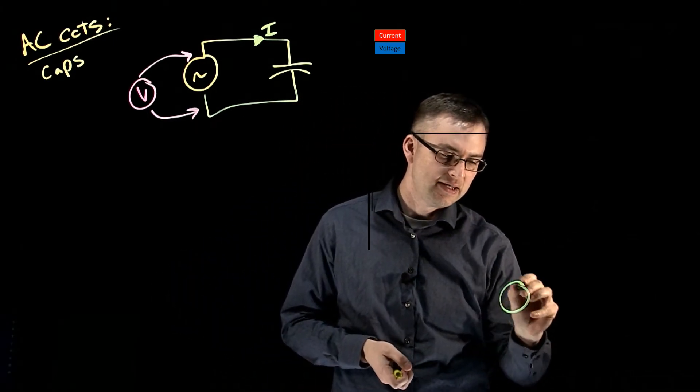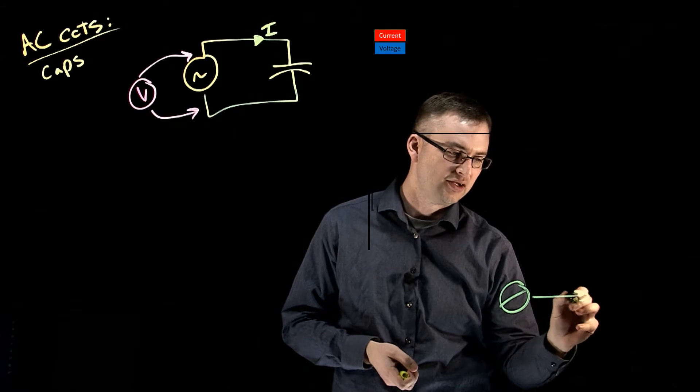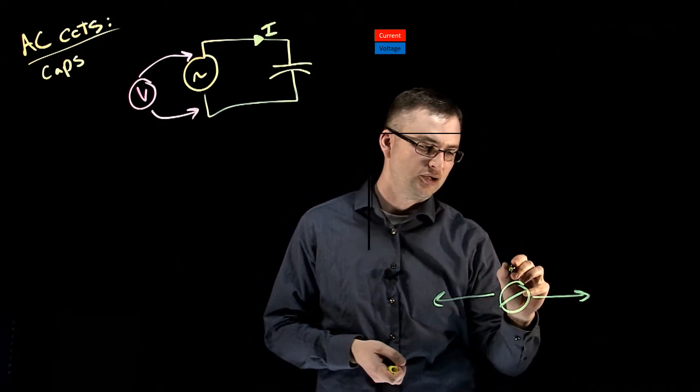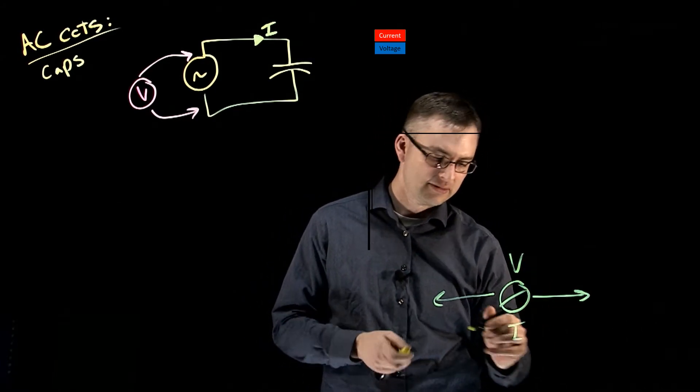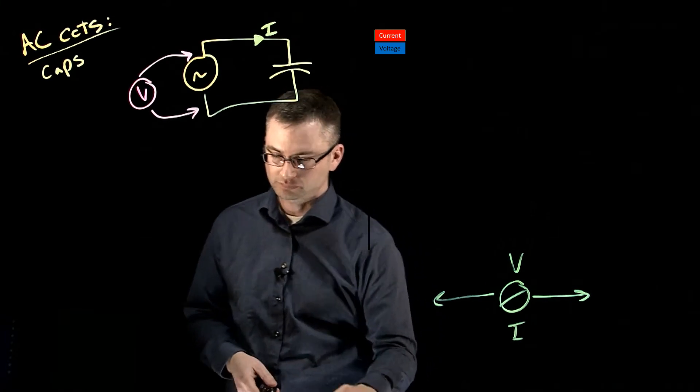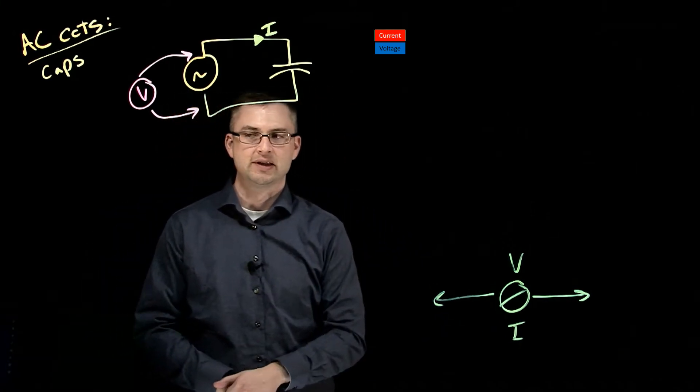And ultimately, what is the phase relationship? That's the shift left to right between voltage and current in a capacitive circuit. So let's go ahead and we'll see what that looks like.